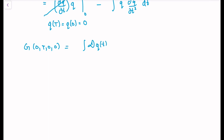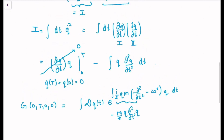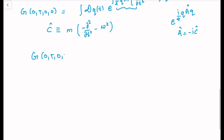The propagator can now be written as the path integral over q of e to the power i over 2, with the remaining terms being m times minus the second time derivative q-double-dot minus omega squared times q, all integrated over dt. This is beginning to look like the known result e to the power i over 2 times q A q, where A equals minus i times some operator C, and C is defined as m times the operator minus d²/dt² minus omega squared.